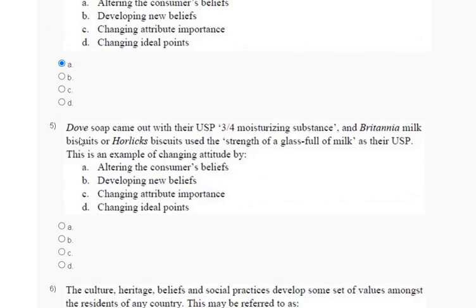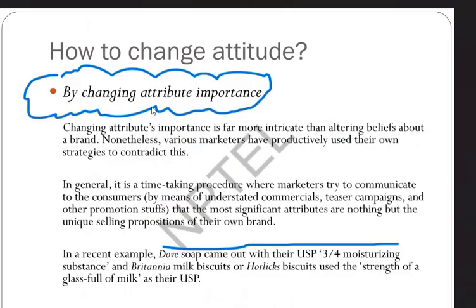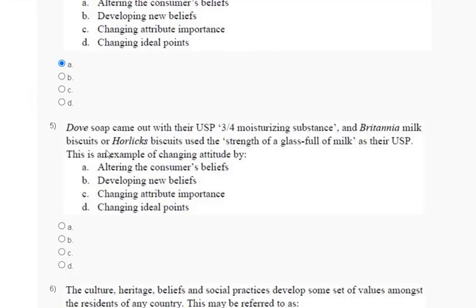Question number 5: Dove soap came out with their USP of one-quarter moisturizing substance, and Britannia Milk Biscuit of Tiger Hot Legs biscuit used the strength of a full glass of milk as their USP. This is an example of changing attitude by changing attribute importance. The correct answer for question number 5 is option B — changing attributes and ingredient of importance.